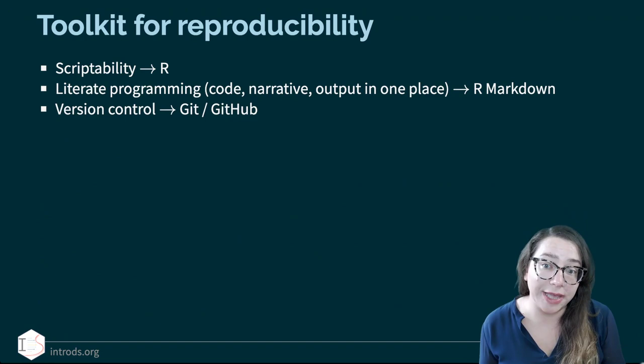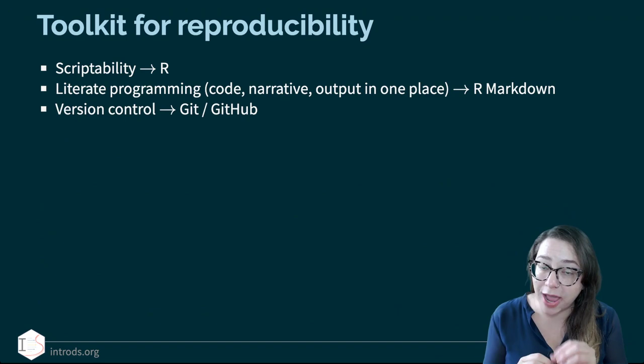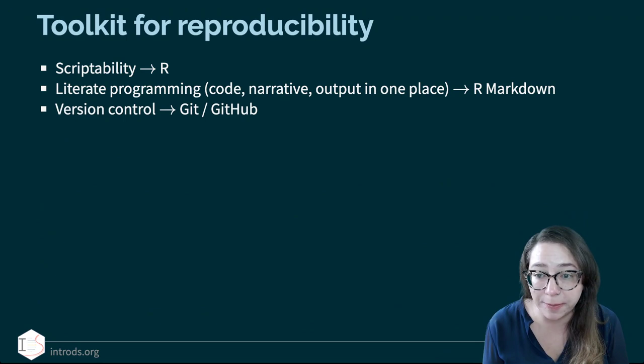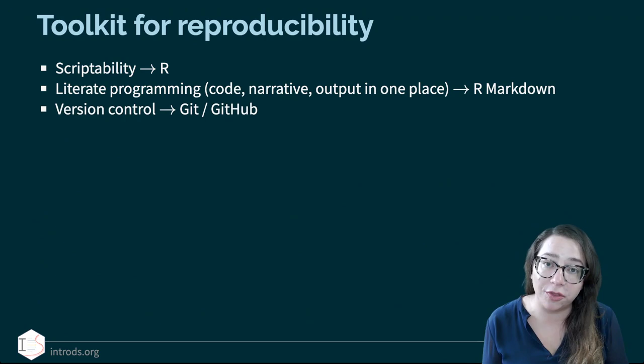We want to be able to use literate programming — that means our code, narrative, and output are all in one place in that R Markdown document. That's another piece of the reproducibility puzzle, and we want to make sure that our process is documented along the way using version control tools like Git and GitHub.